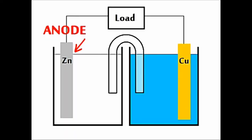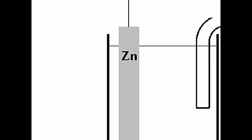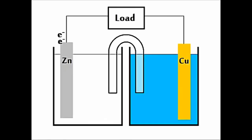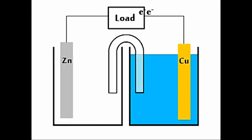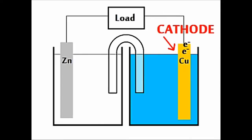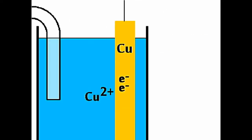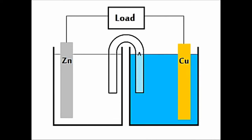We start at the anode. Electrons are lost there, and go through the wire, and through the load on fire. They enter the cathode, and reduce the cations, and the anions go through the salt bridge back to where? Where?